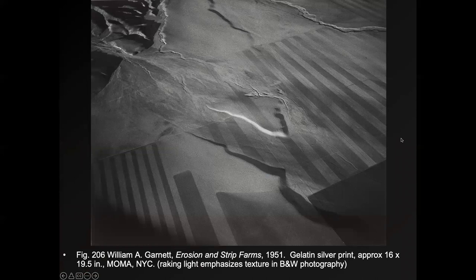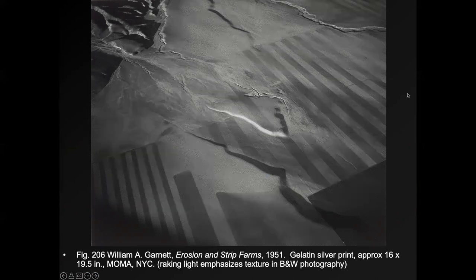Visual texture can also appear in photography. This is William Garnett's Erosion and Strip Forms. When sunlight is very low in the sky — either in the morning or evening — it tends to emphasize the texture on the ground by making more shadows. This is called raking light, meaning light coming from low and going across, and it emphasizes the texture of these various strip forms. You can follow where the water is going from the texture created by the raking light.